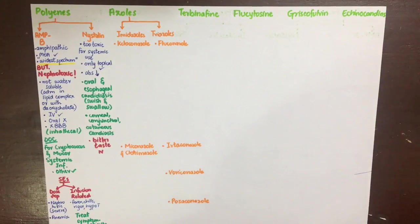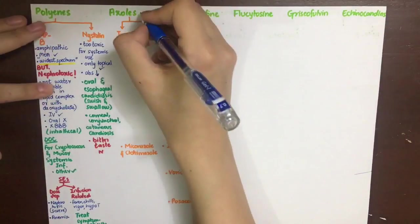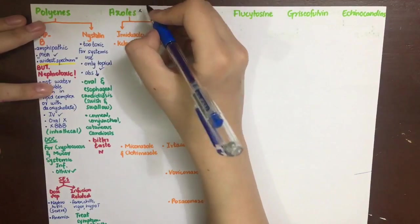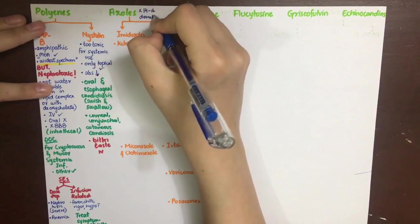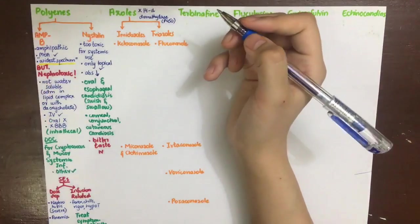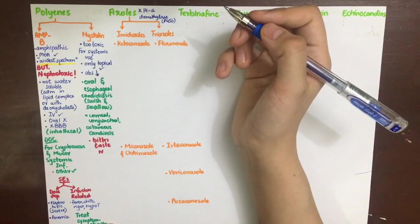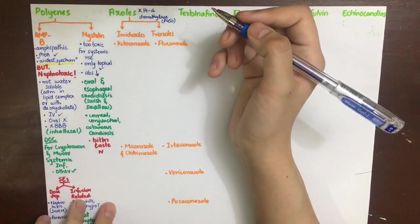Azoles inhibit fungal P450-dependent enzymes such as 14-alpha-demethylase. This enzyme is involved in the conversion of lanosterol into ergosterol, the final step of ergosterol synthesis. By inhibiting ergosterol synthesis, it will damage the cell membrane of the fungus.